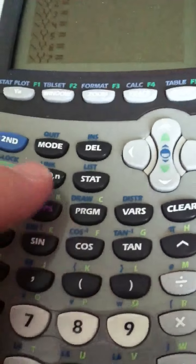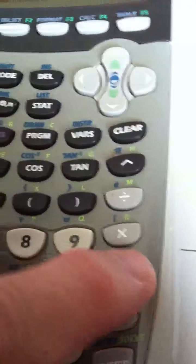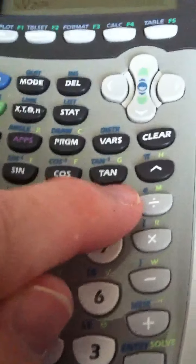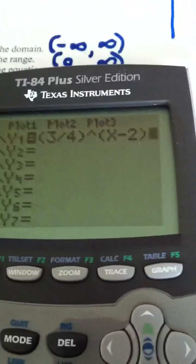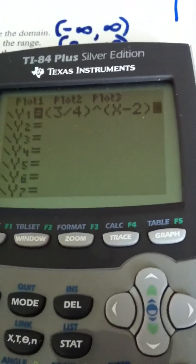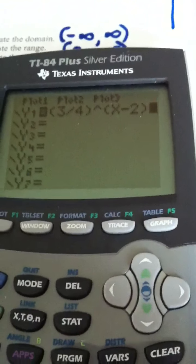and then in parentheses, I need to put x minus 2. See how I had those in parentheses because the whole power was x minus 2. Very important to group them.